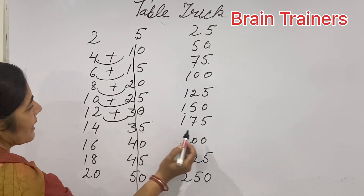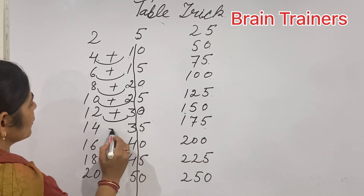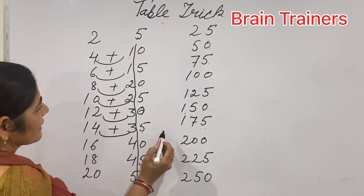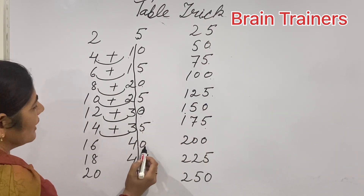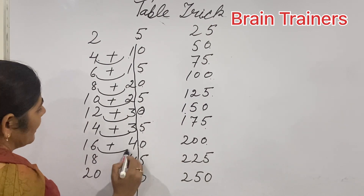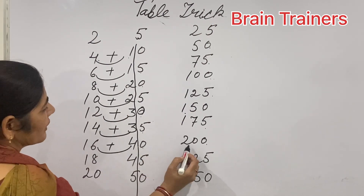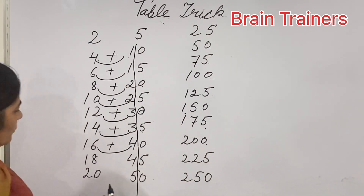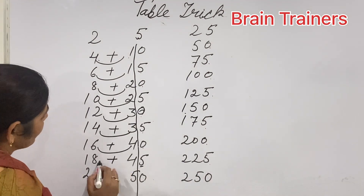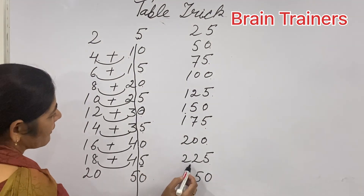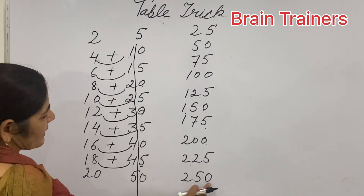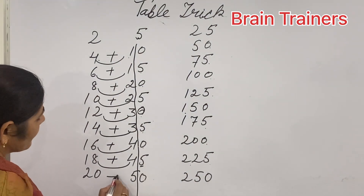This last digit is 5. We have 3 plus — this is 17. This is 14. Last digit is 0. 16 is 4. This is 200. This is 5, we have 4 plus — this is 22. Last digit is 0. This is 25.